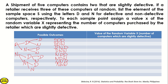Now, find the value of random variable X — the number of computers which are slightly defective. For D,D,D — the defective count is 3. For the next outcomes, the defective counts are 2, 2, 1, 2, 1, 1, and 0. So the possible values of X are 0, 1, 2, and 3.